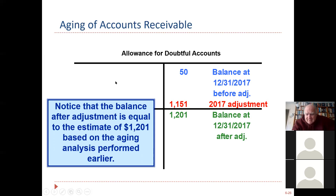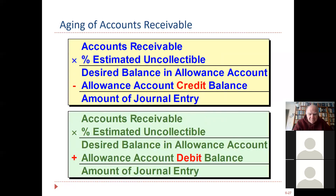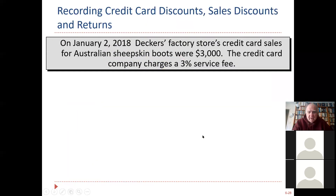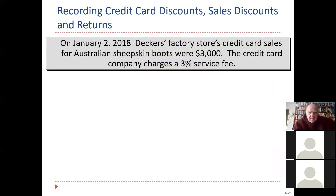If you're looking at a T-account and all you saw was the $50 and the $1,201, and I asked what was your bad debt expense — you'd automatically know it's $1,151. Because whenever you credit the allowance, you're debiting bad debt expense. And anytime you debit the allowance contra asset, you're crediting accounts receivable. Be careful — you could have a debit balance in the allowance. If you had a debit balance of $50, then you'd have to come up with $1,251 instead.